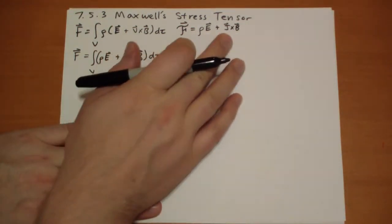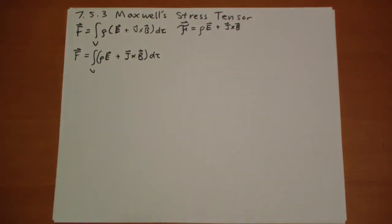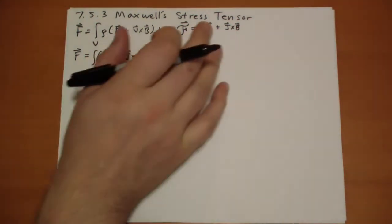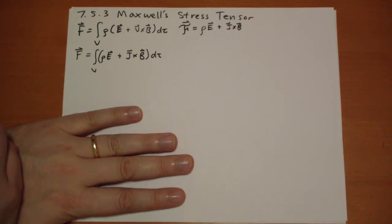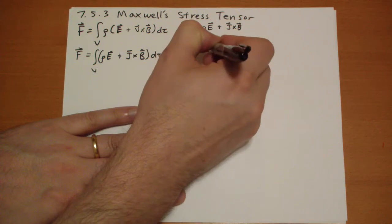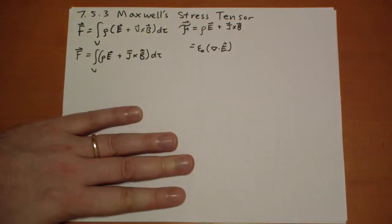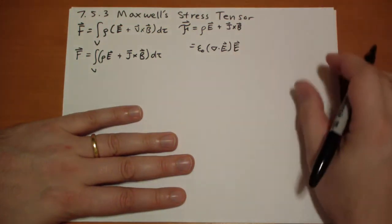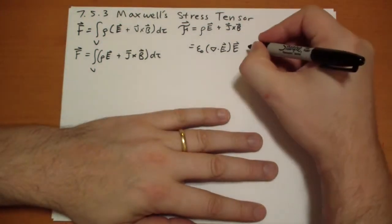If we modify this, if we pull out the rho and J terms to get this as an expression of E and B alone, using Gauss's law, we can pull out that rho is equal to epsilon naught the gradient of E. So we get epsilon naught the gradient of E vector times E vector. That looks a little funny, but we're going to get used to that.